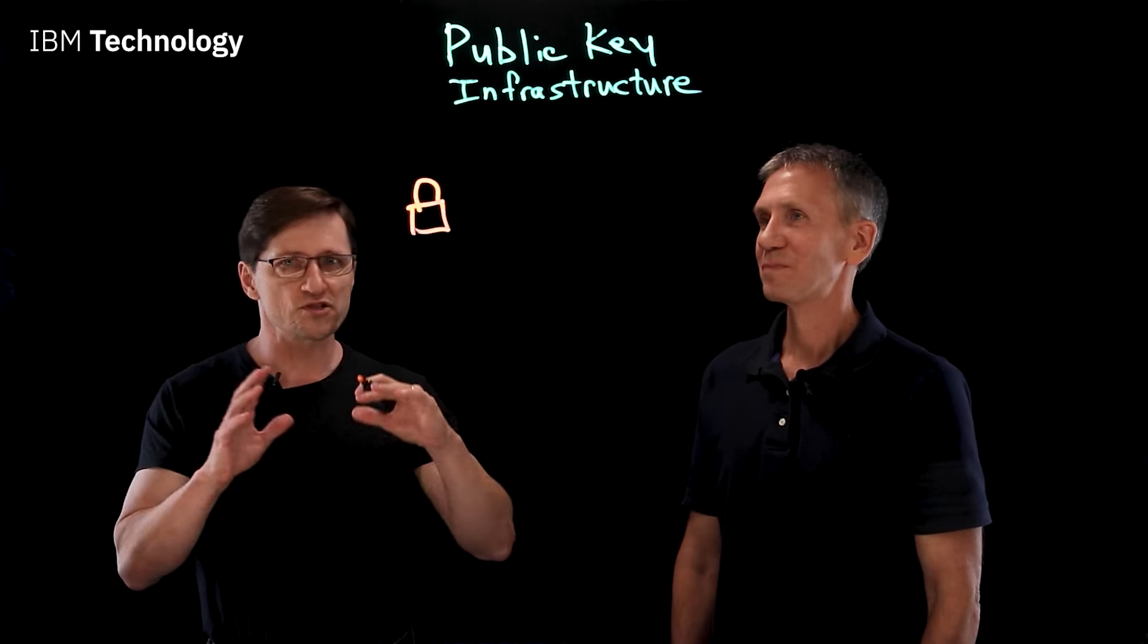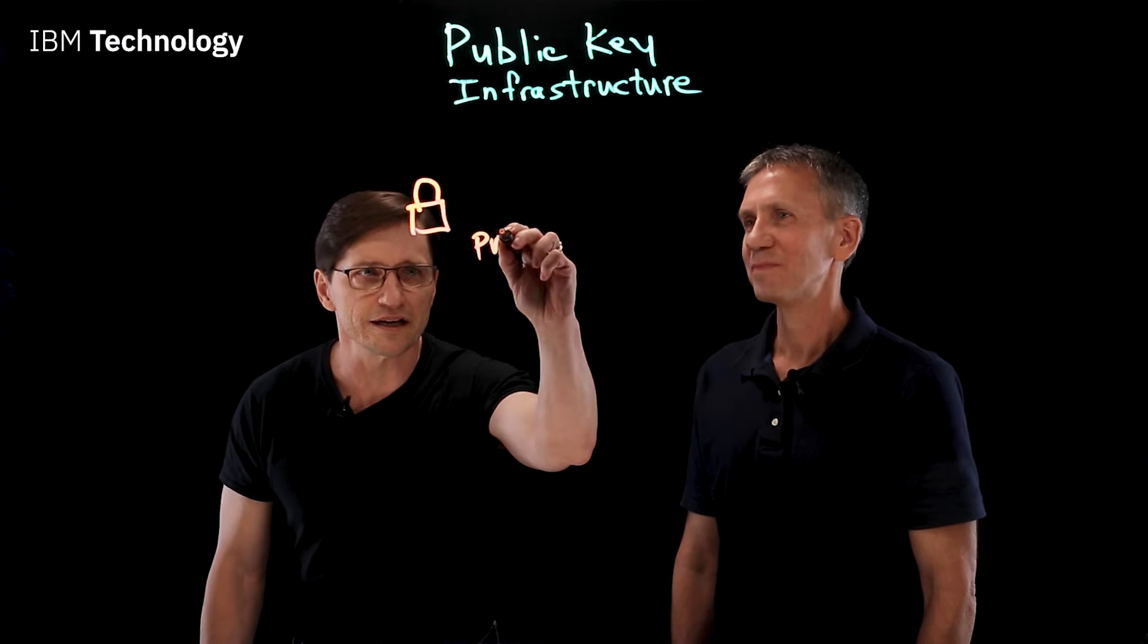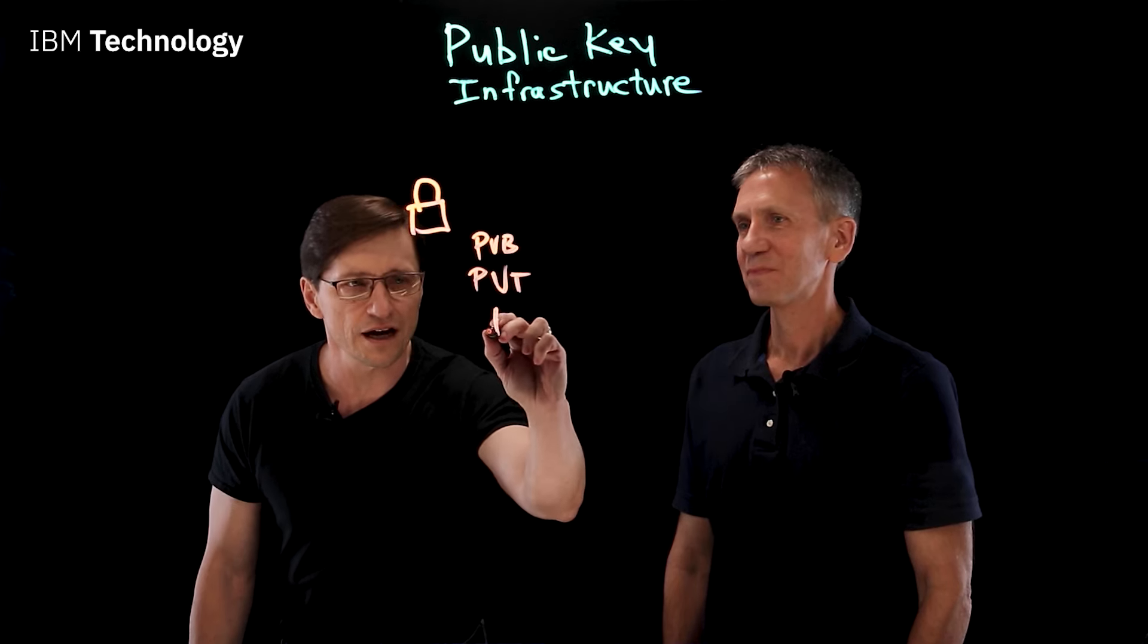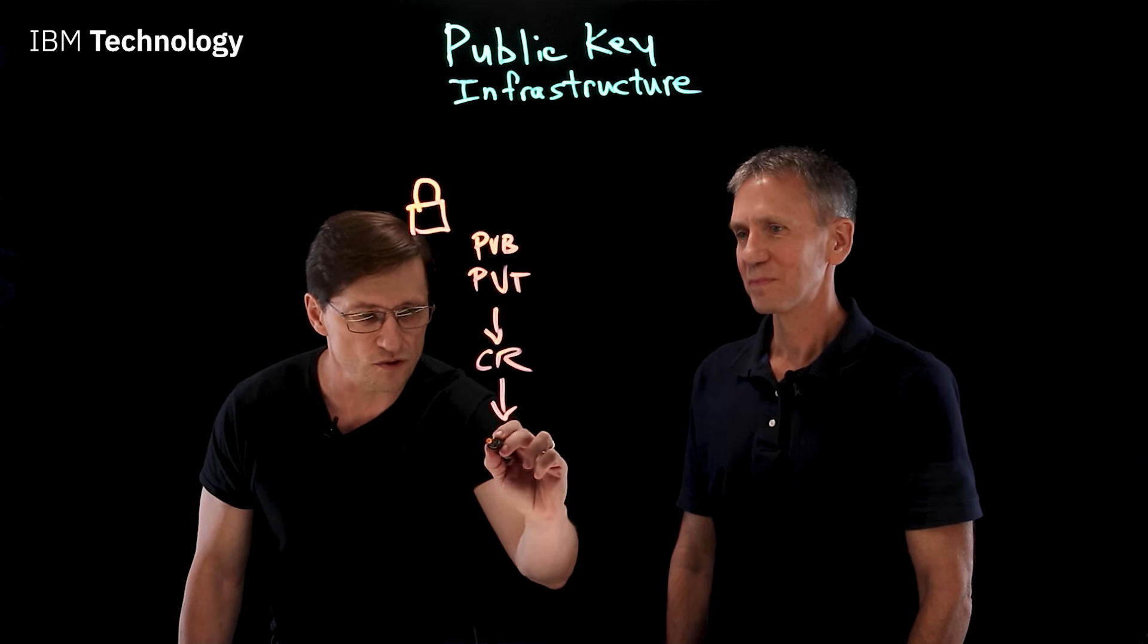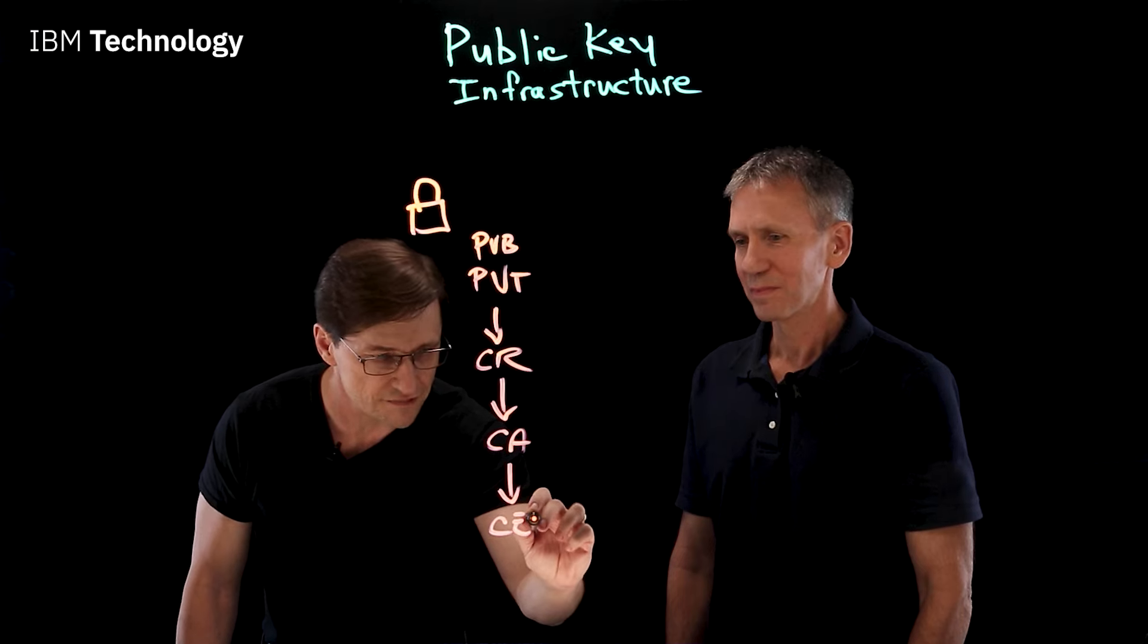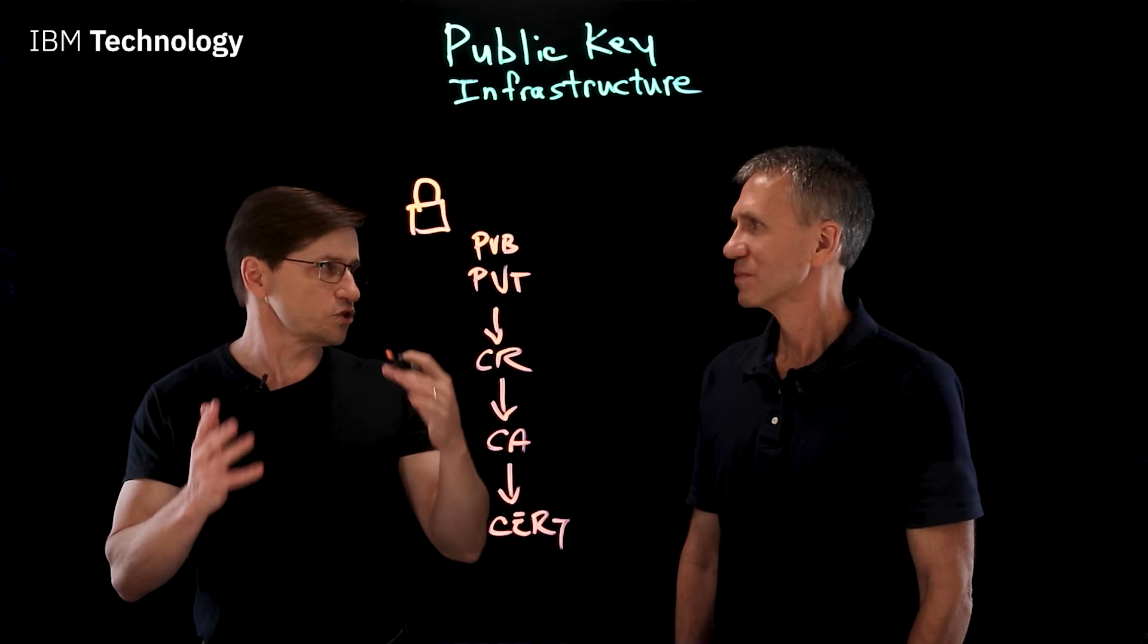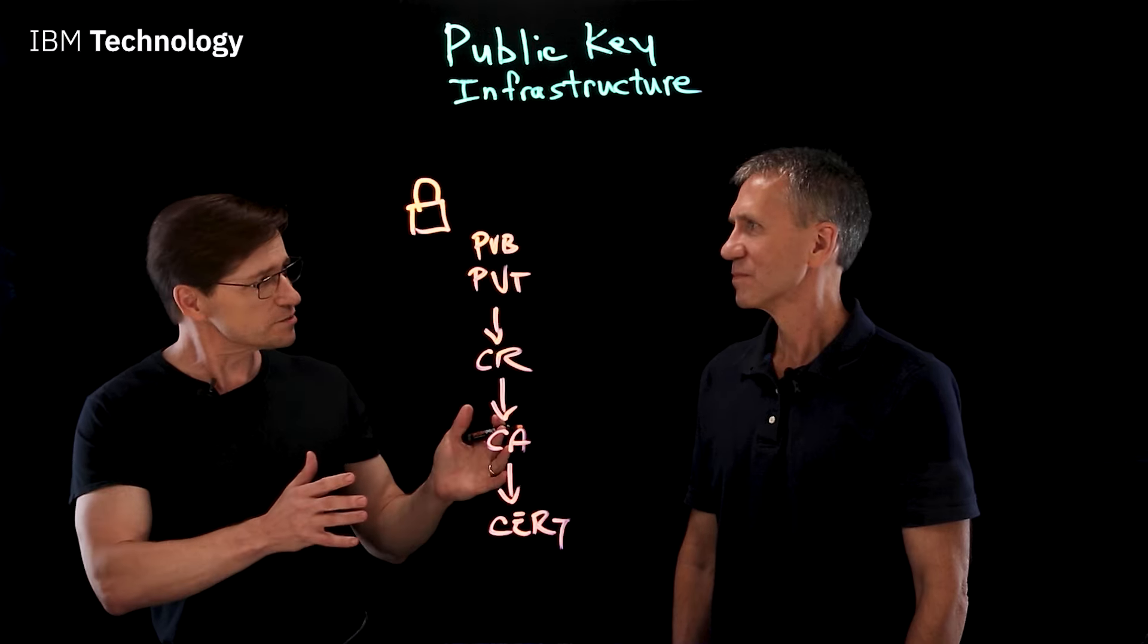And so I was going through those steps and I pretty much just followed a runbook. That involved first generating a public and private key. And then from there, I created a certificate request, which I sent to a certificate authority. And then finally, I got my certificate, which I then installed on the web server. But I really didn't understand how it worked. Could you explain that to me?